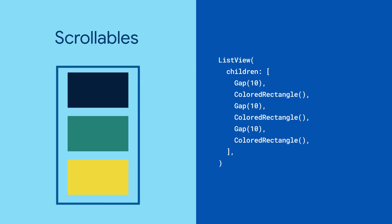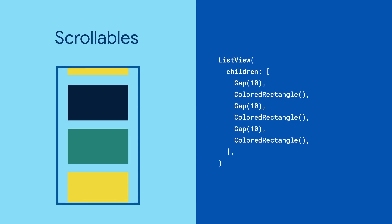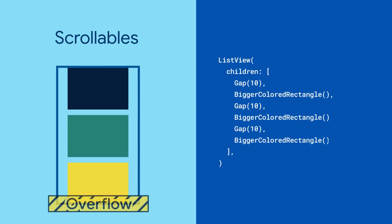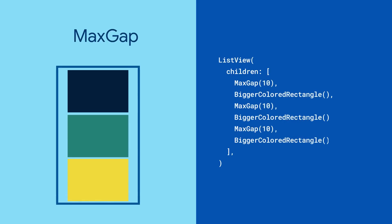It works inside scrollable widgets like ListViews, too. If you're working with a small amount of space and avoiding overflow, MaxGap will only fill the available space up to your specified size.